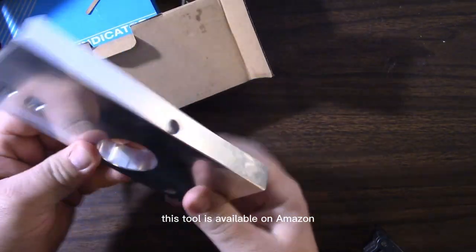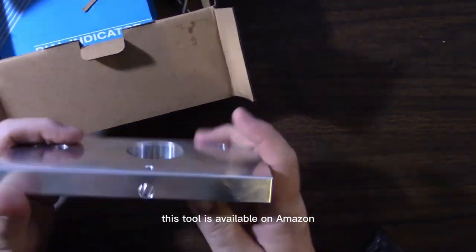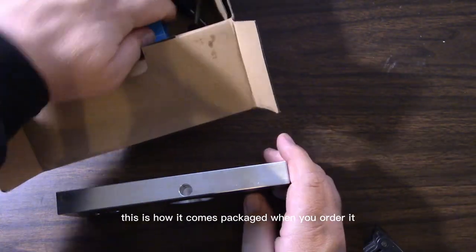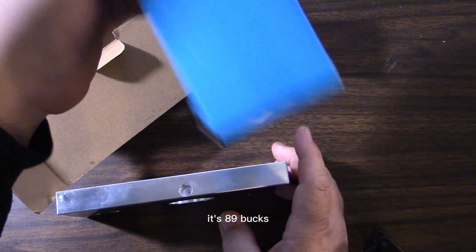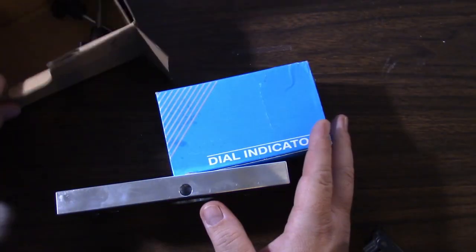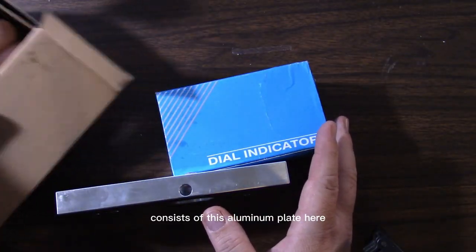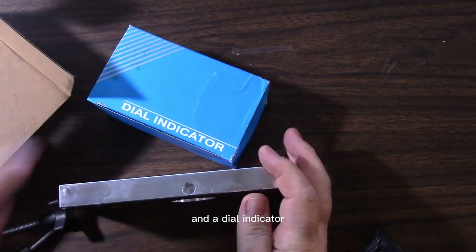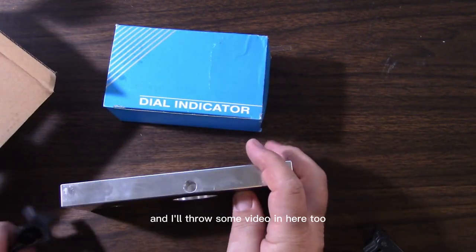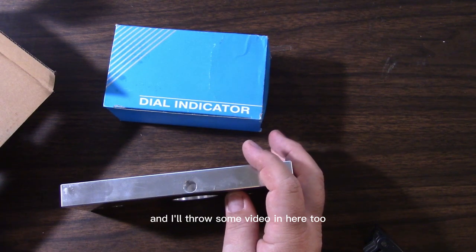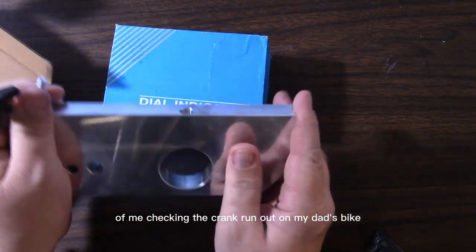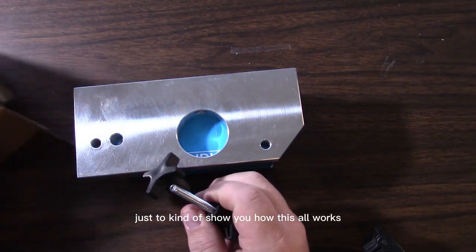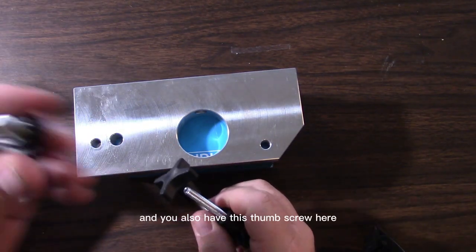There's this tool available on Amazon. I'm going to put the link down in the description. It's 89 bucks and consists of this aluminum plate here and a dial indicator. I'll throw some video in here too of me checking the crank runout on my dad's bike just to kind of show you how this all works.